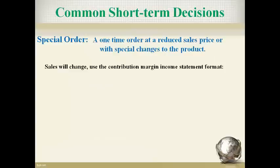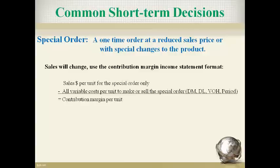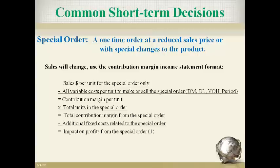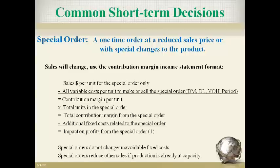Special orders are sales to customers that the company will not have without a special low price or a modification to the product for a different price. Total sales will change if the company accepts the special order, so always use the contribution margin income statement format. Begin with the sales price and variable cost per unit related only to the special order to get the contribution margin per unit. Multiply by the number of units to get total contribution margin added. Subtract any added new fixed costs to determine the change to operating income. Special orders do not change the ongoing fixed cost of the company. However, sales to normal customers will not occur when a company is already manufacturing at capacity and a special order is accepted.